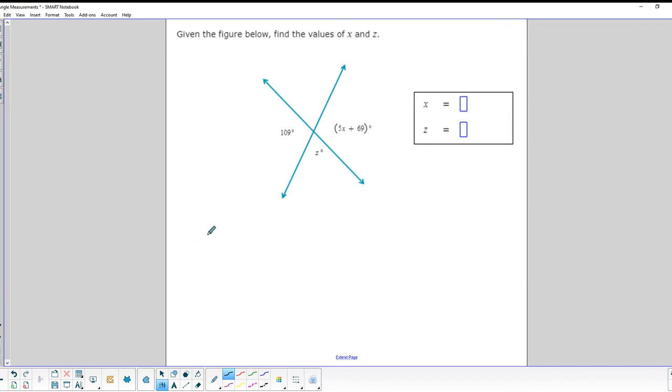Okay. So here's another diagram. And we notice that we've got one of those intersections with two angles on either side of the intersection. So we happen to know that when angles are straight across to an intersection like that, that they equal each other. So that means that we're going to have 5x plus 69 equals 109.